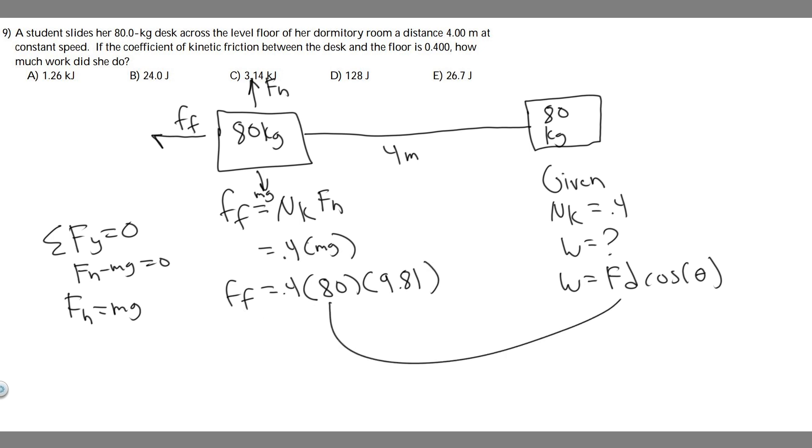Now we have the force of friction so we can plug it in. Work equals 0.4 times 80 times 9.81, and then we multiply by d. The distance the object travels is 4 meters, so it's going to be 4. Then we have to multiply by the cosine of theta. Keep in mind what theta is - it's the angle between the force and the direction it goes.